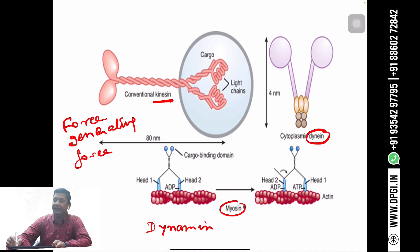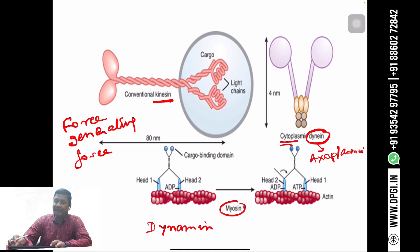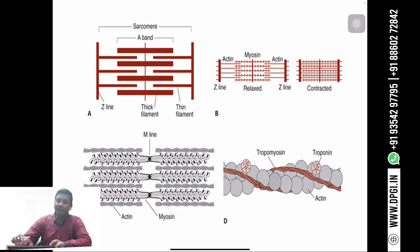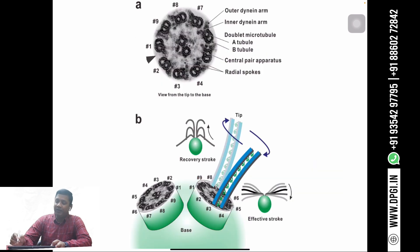Dynein is of two types: one is the cytoplasmic dynein and the other is the axonemal dynein. Kinesin and dynein help in the transport of cargo in the cell, and myosin helps in the contraction of the muscle. The axonemal dynein helps in the movement of the cilia in the body.